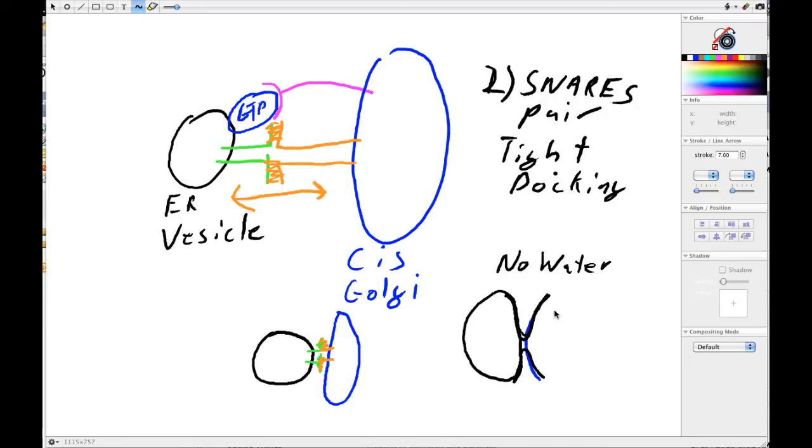And so then you have the ER vesicle, and I'll just fill this out in blue, with the compartment. And so you end up something that's more like this. And then the compartment of the ER vesicle is now contiguous with the cis-Golgi, and that's how the vesicle fusion occurs.